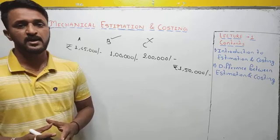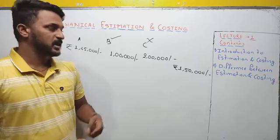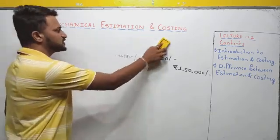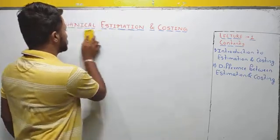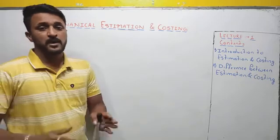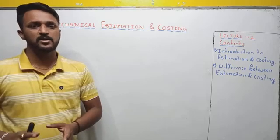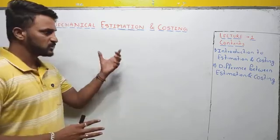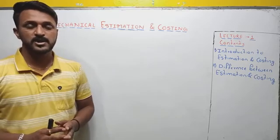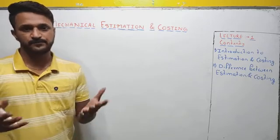Accurate estimation will definitely tell you whether a particular project or article will be profitable or not. Now let us move to the concept of costing. We have seen that estimation is an art or a process of finding the probable or approximate cost of a product or project before it is actually manufactured or started. So what is costing? Costing is a process of finding the actual cost of the project after the work is finished or after manufacturing has been done.